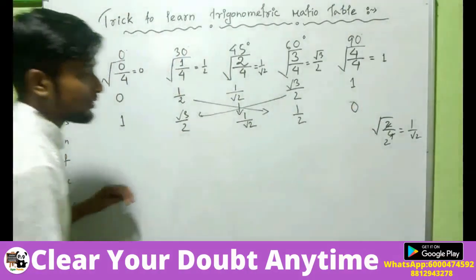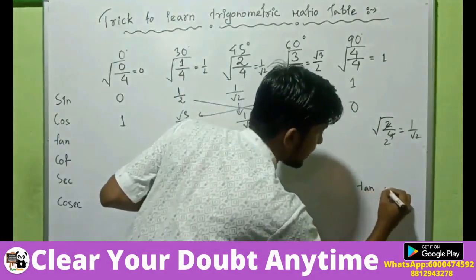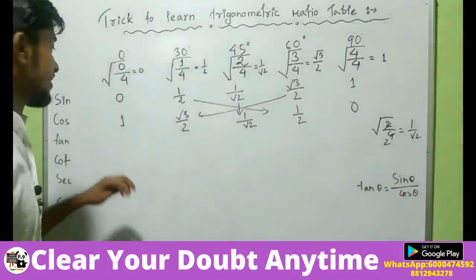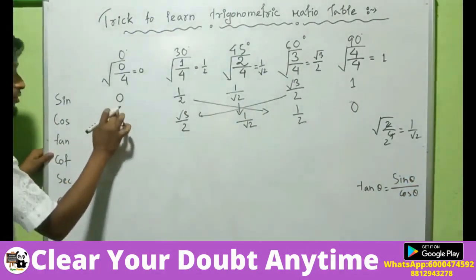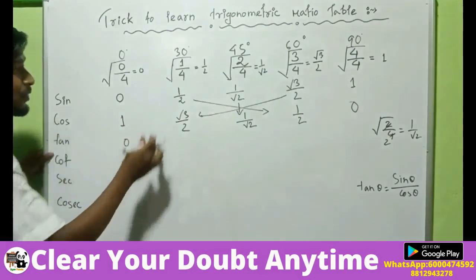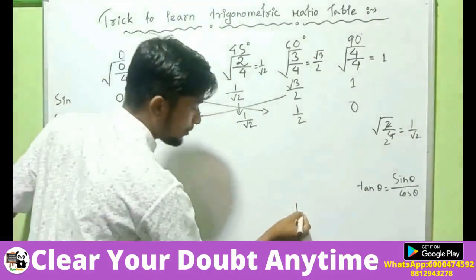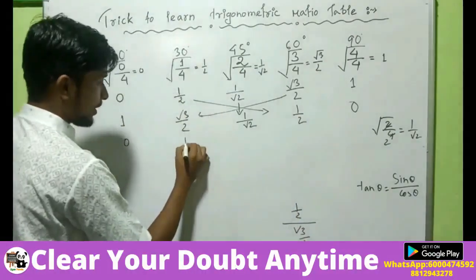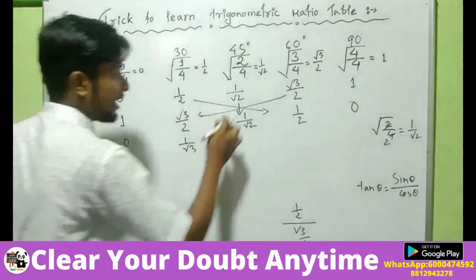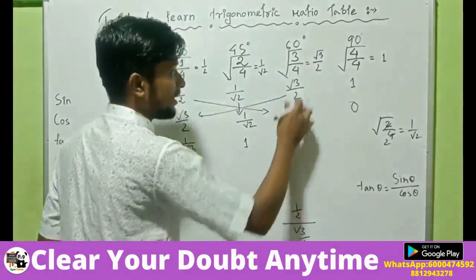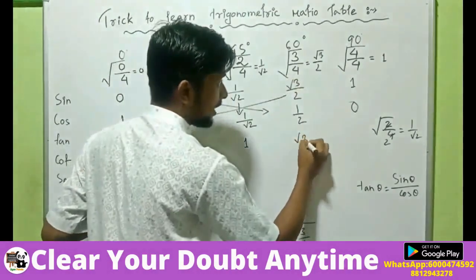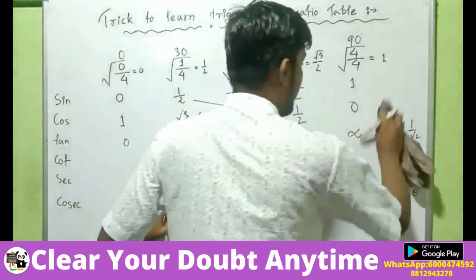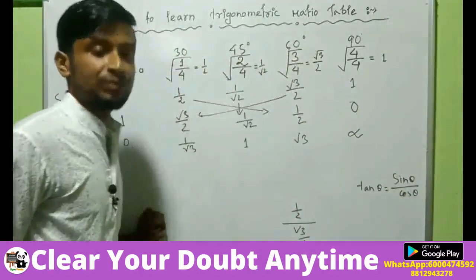Now, what about tan? We know that tan theta equals sine theta by cos theta. So: 0 by 1 is 0; 1 by 2 divided by root 3 by 2 — the 2s cancel — gives 1 by root 3; 1 by 2 divided by 1 by 2 is 1; root 3 by 2 divided by 1 by 2 gives root 3; and 1 by 0 is infinite — not definable, because if we divide any number by 0 we get infinity.